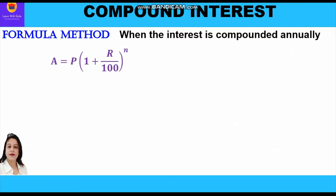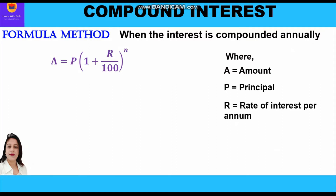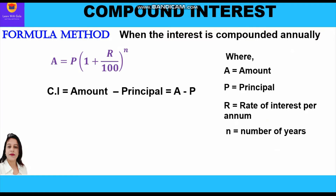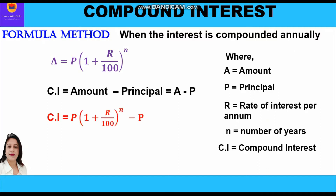When the interest is compounded annually, we will use the formula: A = P(1 + r/100)^n, where A is the amount, P is the principal, r is the rate of interest per annum, and n is the number of years. Compound interest is the difference between amount and principal, so CI = A − P. Substituting, CI = P[(1 + r/100)^n − 1]. These are the amount and compound interest formulas for interest compounded annually.